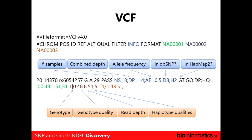The FORMAT field gives you the key to understanding what's going on per sample. GT means genotype — those are the 0/0, 0|1, and 1/1 values. GQ is genotype quality — here we see 48, 48, and 43. DP is the depth — here we see 1, 8, and 5. And then HQ is the haplotype quality, which was missing on that last sample.